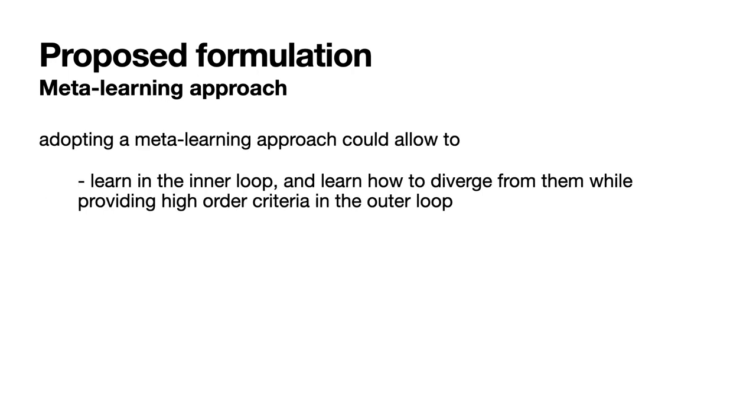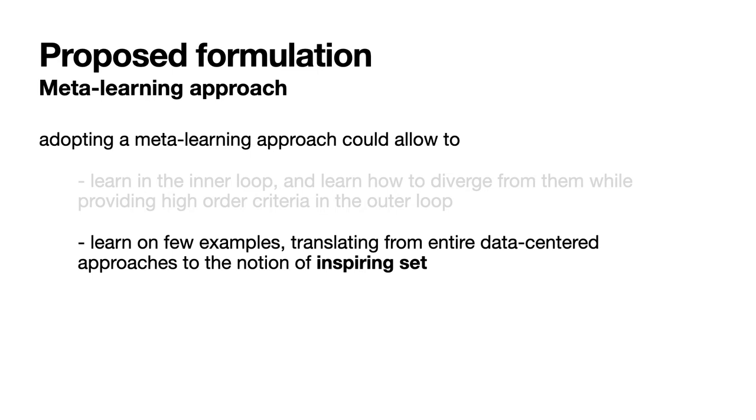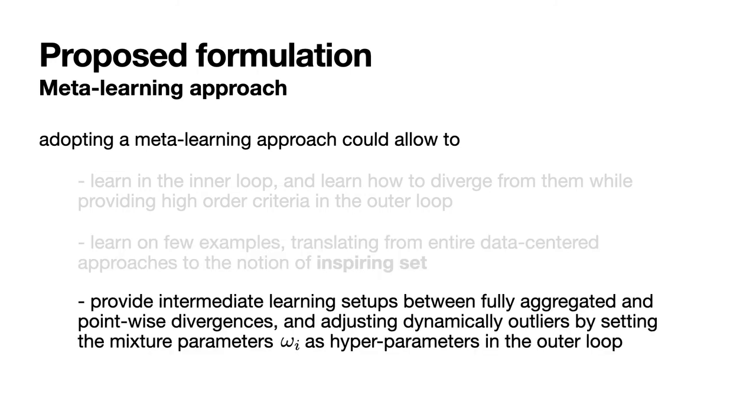Hence, adopting a meta-learning approach could allow you to learn in the inner loop and learn how to diverge from them while providing higher-order criteria in the outer loop. It would also allow us to learn on few examples, translating from entire data-centric approaches to the notion of inspiring sets important in computational creativity. Furthermore, it could also provide intermediate learning setups between fully aggregated and pointwise divergences, and adjusting dynamically outliers by setting the mixture parameters omega as hyperparameters in the outer loop.